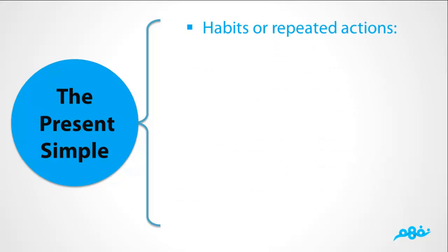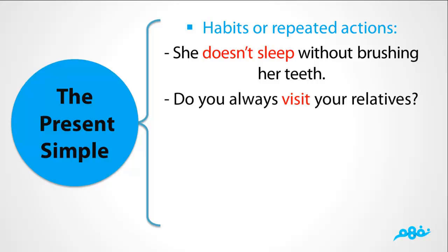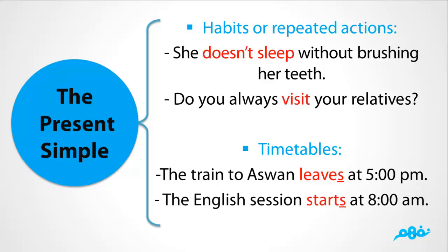Third, it's used to express habits or repeated actions. For example: 'She doesn't sleep without brushing her teeth.' 'Do you always visit your relatives?' And finally, we use the present simple to express a timetable or actions that happen according to a timetable — for example: 'The train to Aswan leaves at 5 o'clock.' 'The English session starts at 8 am.'